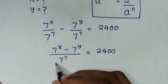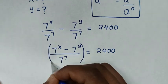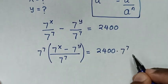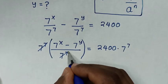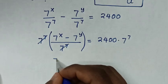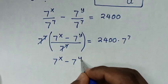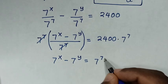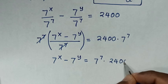Now, to cancel this denominator, we will multiply by 7 power of 7 on both sides. So this 7 power of 7 cancels this 7 power of 7. Then it will be 7 power of x minus 7 power of y is equal to 7 power of 7 times 2400.